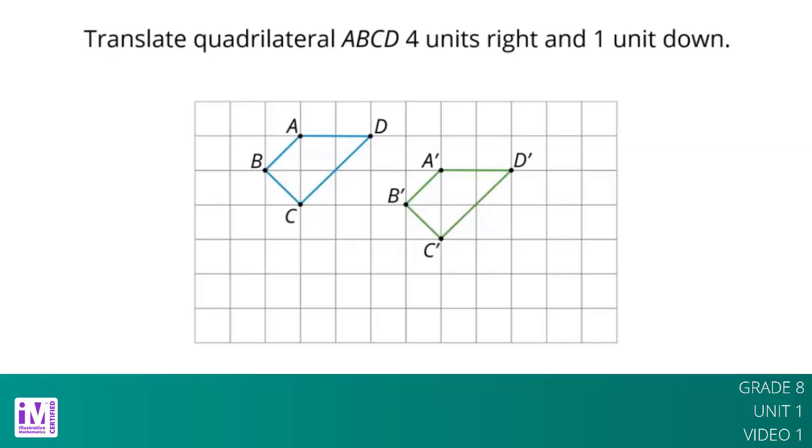To tell apart the original figure from its image, points in the image are sometimes labeled with the same letter as the original figure, but with a prime symbol attached, as in A prime. Quadrilateral A prime, B prime, C prime, D prime is the image of quadrilateral ABCD after the transformation.